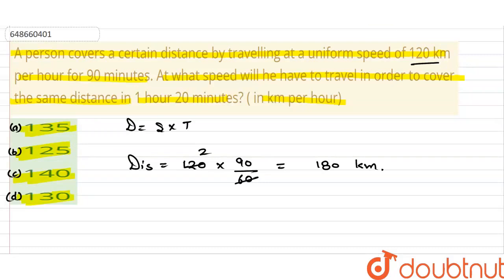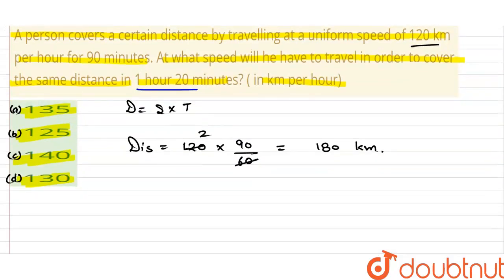The question asks, if the distance is covered in 1 hour 20 minutes, how much speed will it be? So here, we will find speed using distance upon time.